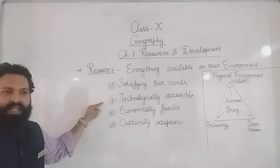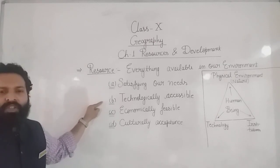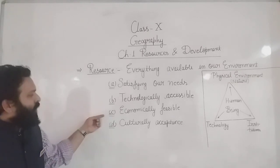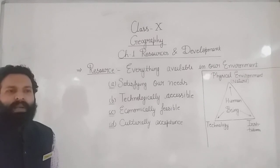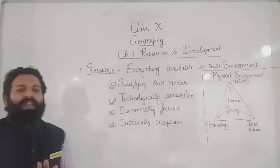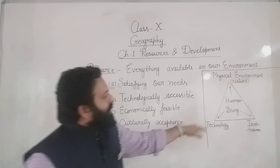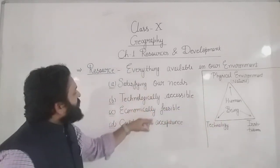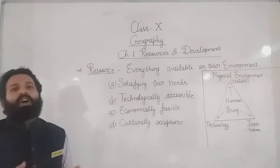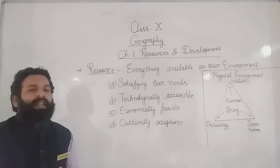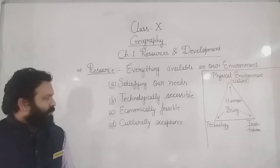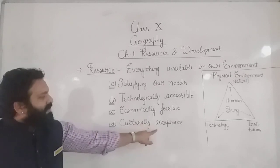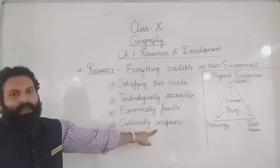To recap: a resource is available in our environment, it satisfies our needs, it is technologically accessible meaning we have the technology to extract it, it is economically feasible meaning we have the funds to convert the physical object into a resource, and finally it must be culturally acceptable — as we discussed with the example of the Peepal tree.